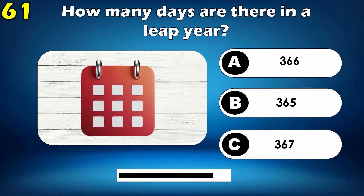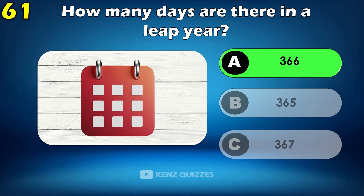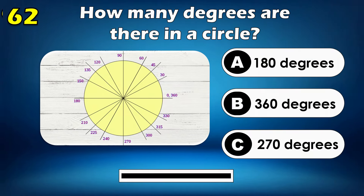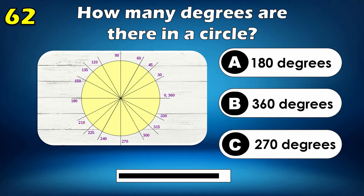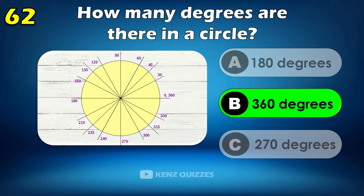How many days are there in a leap year? 366. How many degrees are there in a circle? 360 degrees.